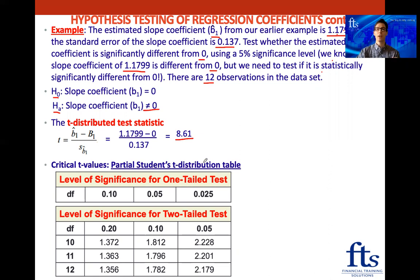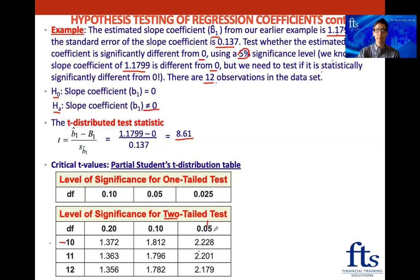Now we compare this to our critical t-values. I've put in a partial Student's t-distribution table here. Since we're testing whether we're different from zero, it's a two-tailed test, so we use the two-tail row. Our level of significance is 5%, so we use that column. With 12 observations minus 2, we have 10 degrees of freedom — so we go down to 10 degrees of freedom in the 5% two-tail column to get our critical value.